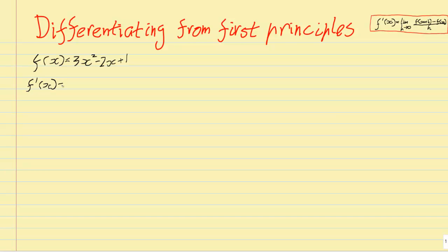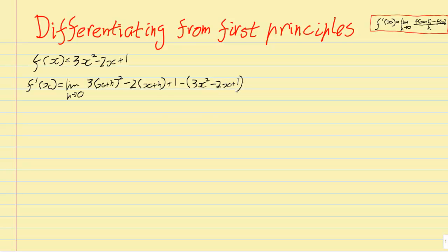So the first derivative of this function is the limit as h approaches 0 of f(x+h) — so that's 3(x+h)² minus 2(x+h) — remembering to put all the brackets in here. If we don't put the brackets, we are lost. Minus f(x) — that just means minus our original function — and again, we have to include the brackets when doing this.